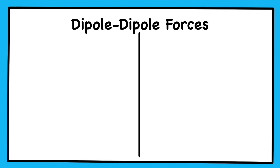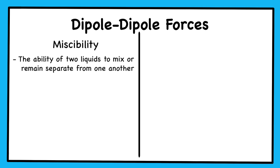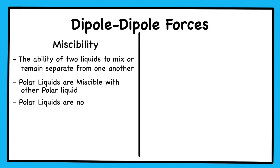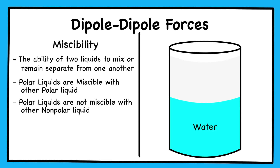The polarity of liquid molecules can also play a huge role in the miscibility, or the ability for two liquids to mix or separate from each other. Generally, polar liquids are miscible with other polar liquids but not miscible with non-polar liquids. This is why water, which is a polar liquid, is not miscible in pentane, which is a non-polar liquid. Similarly, this is why when we combine water and oil — whether that be vegetable oil, olive oil, or motor oil — we see two distinct layers, because oil is a non-polar molecule while water is a polar molecule.